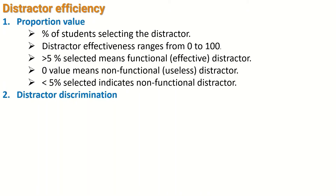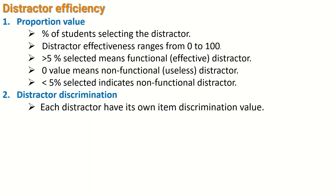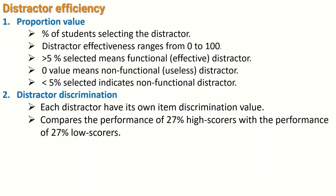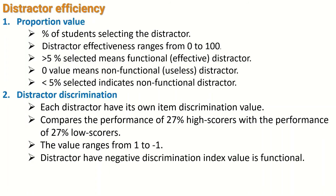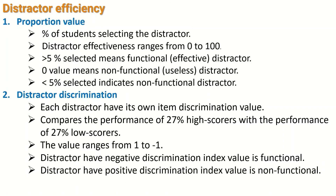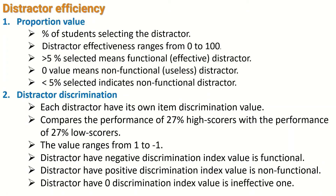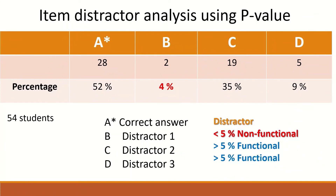Another method to assess the item distractor is to calculate the distractor discrimination. Each distractor will have its own item discrimination value. It compares the performance of the top 27% high scorers with the performance of the bottom 27% low scorers. The value ranges from 1 to minus 1. A distractor with a negative discrimination index value is considered functional, a distractor with a positive discrimination index value is considered non-functional, and a distractor with a zero ID value is ineffective and needs to be replaced, rephrased, or rewritten.